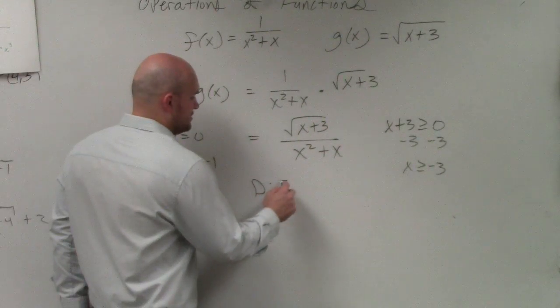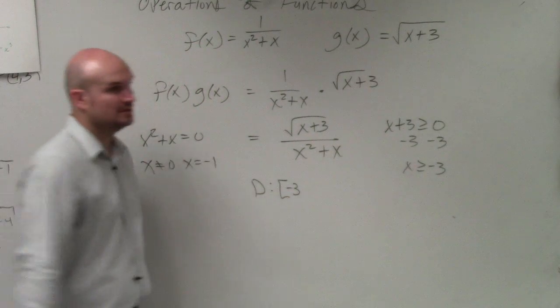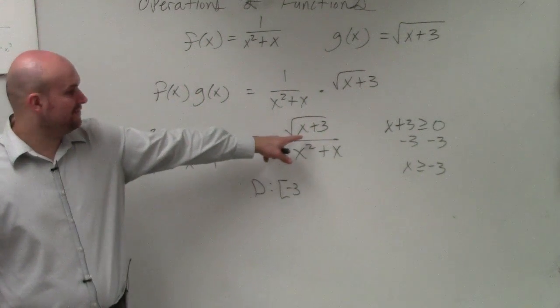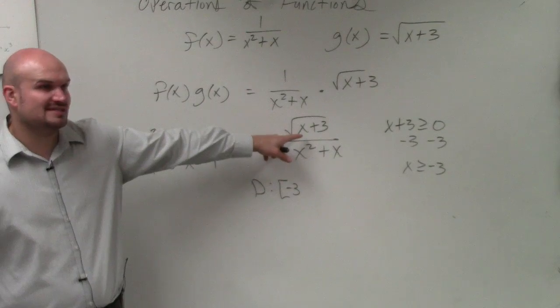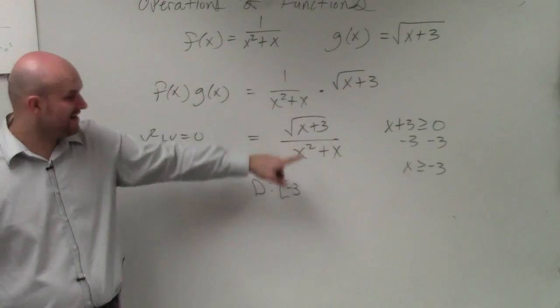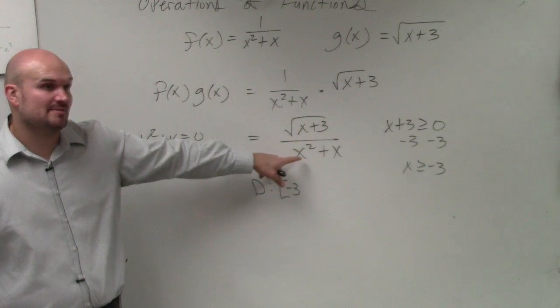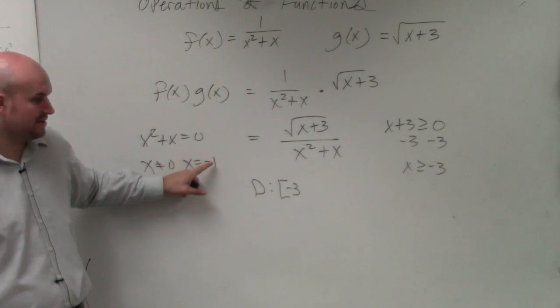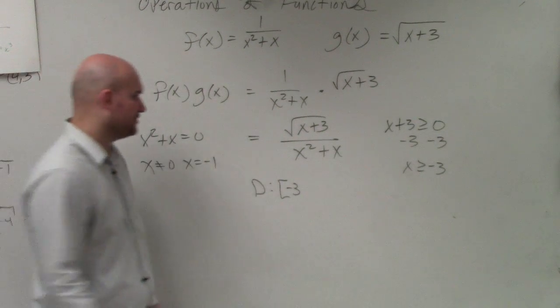So again, starts at negative 3. Because again, what happens if negative 3 is in the numerator? That's 0, right? But that's fine, because negative 3 doesn't make the denominator 0. Only 0 and negative 1 make the denominator 0. So that's why negative 3 is included. But negative 1 is not included, because if you plug in negative 1, it makes the denominator 0.